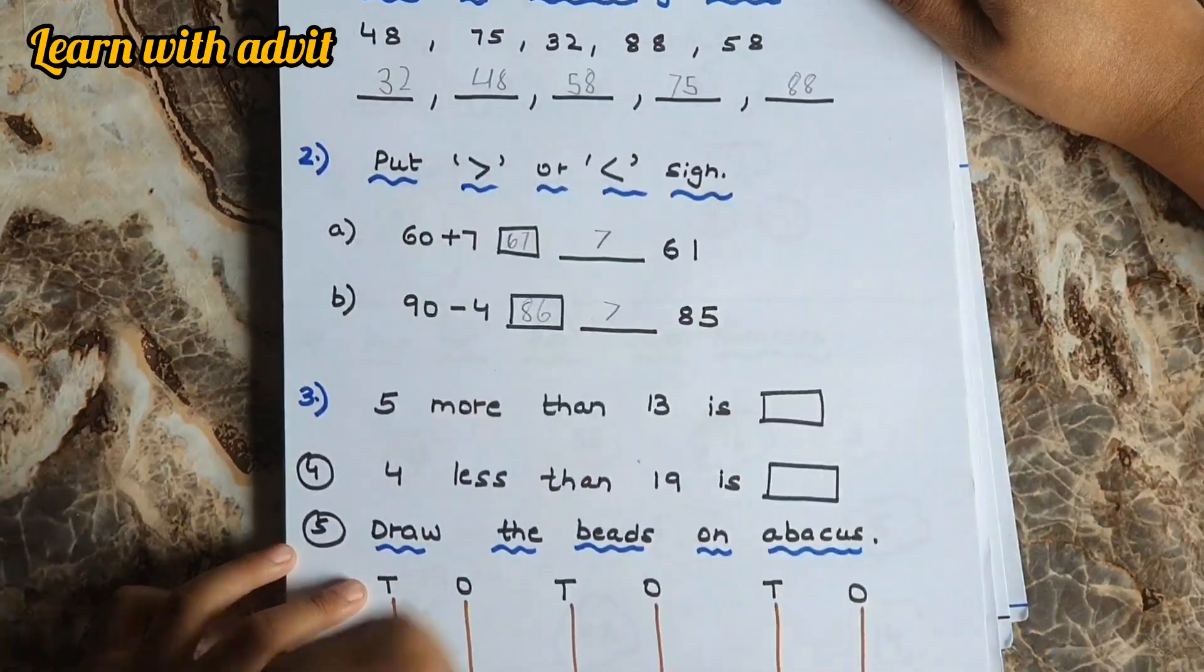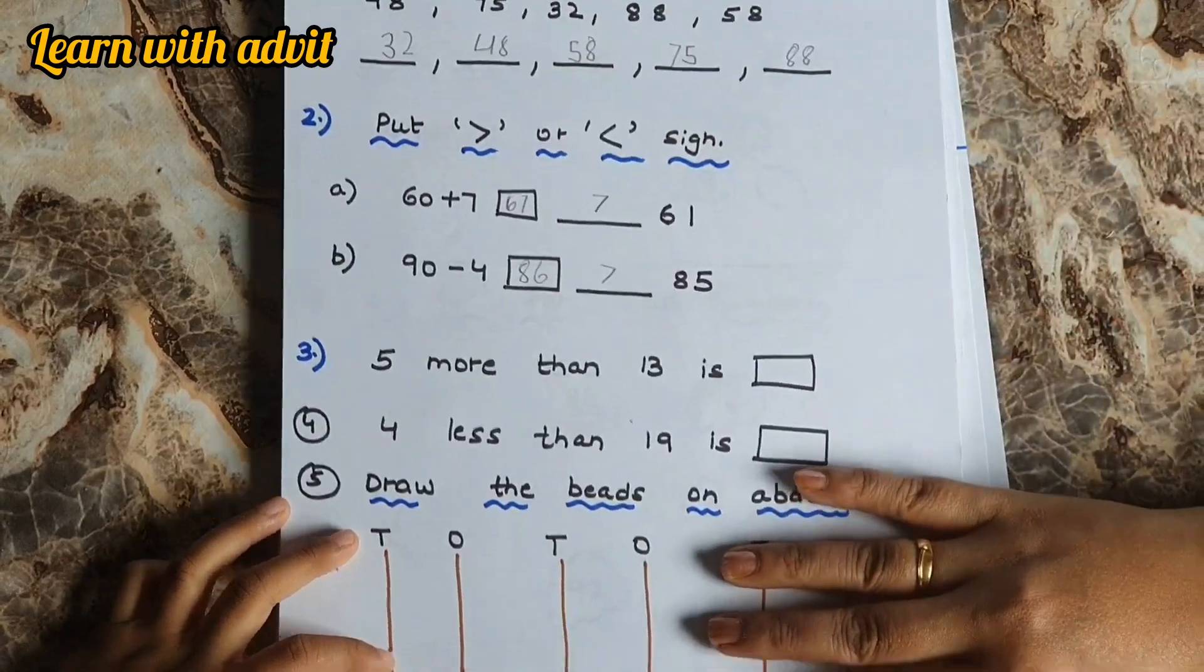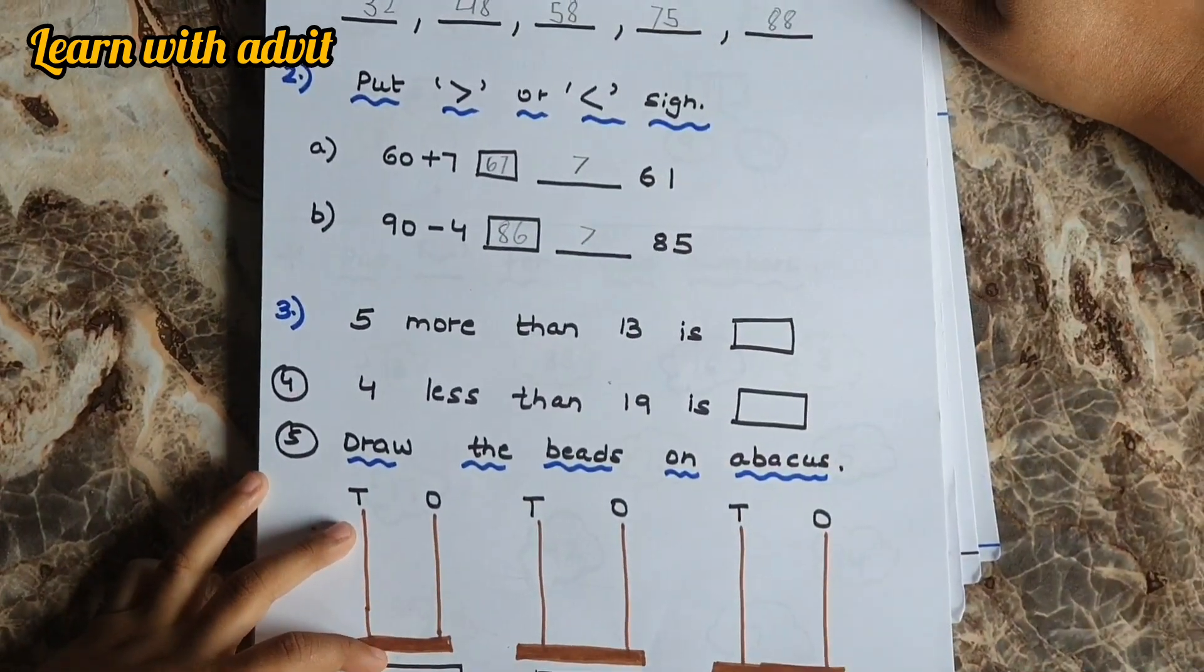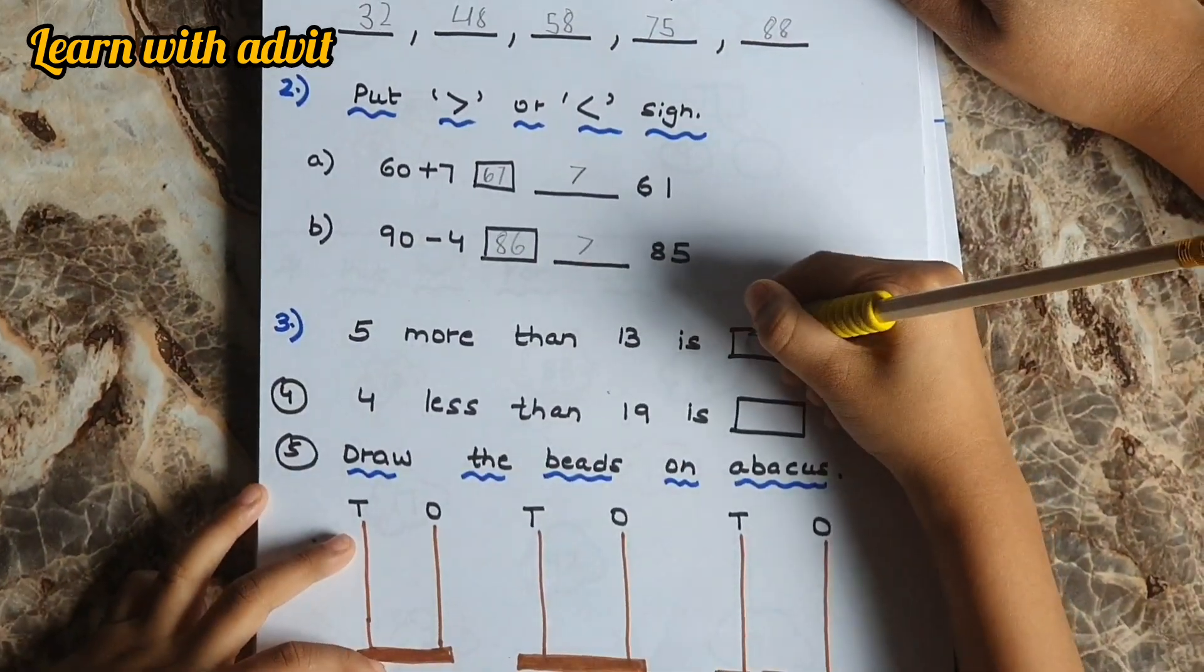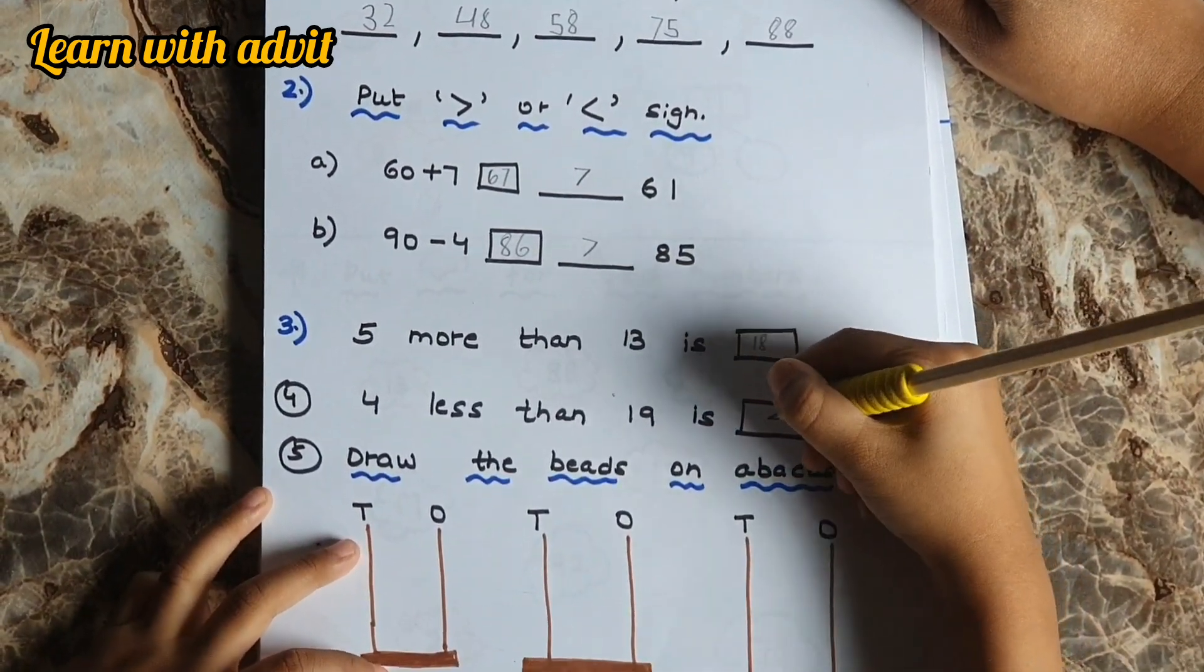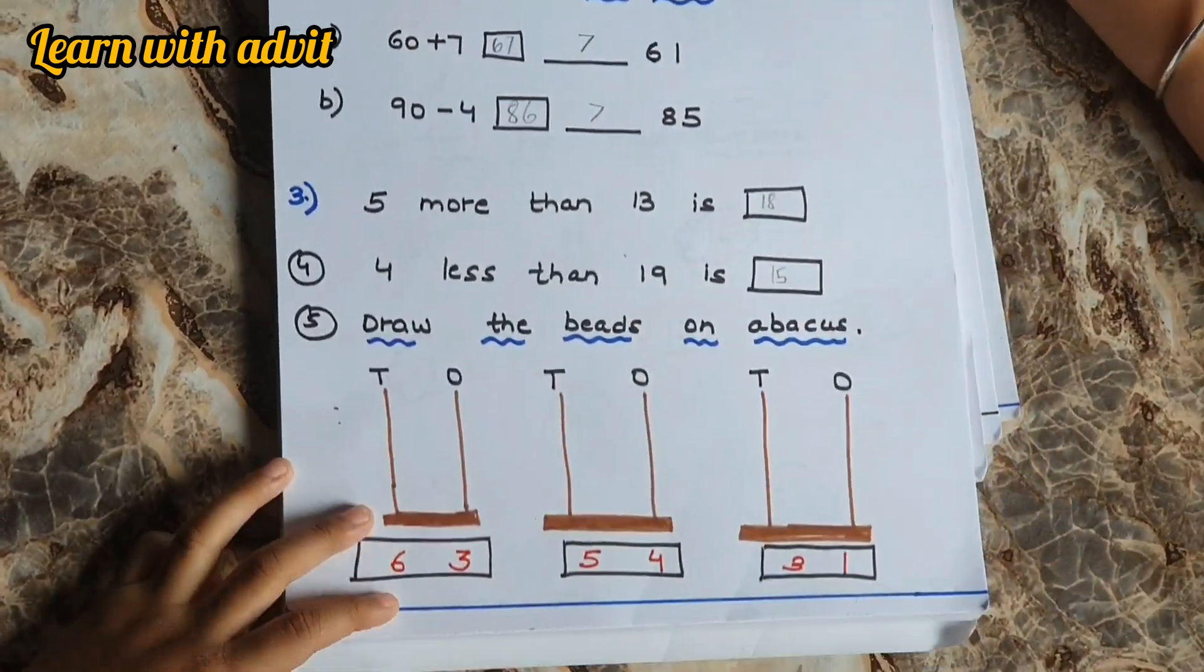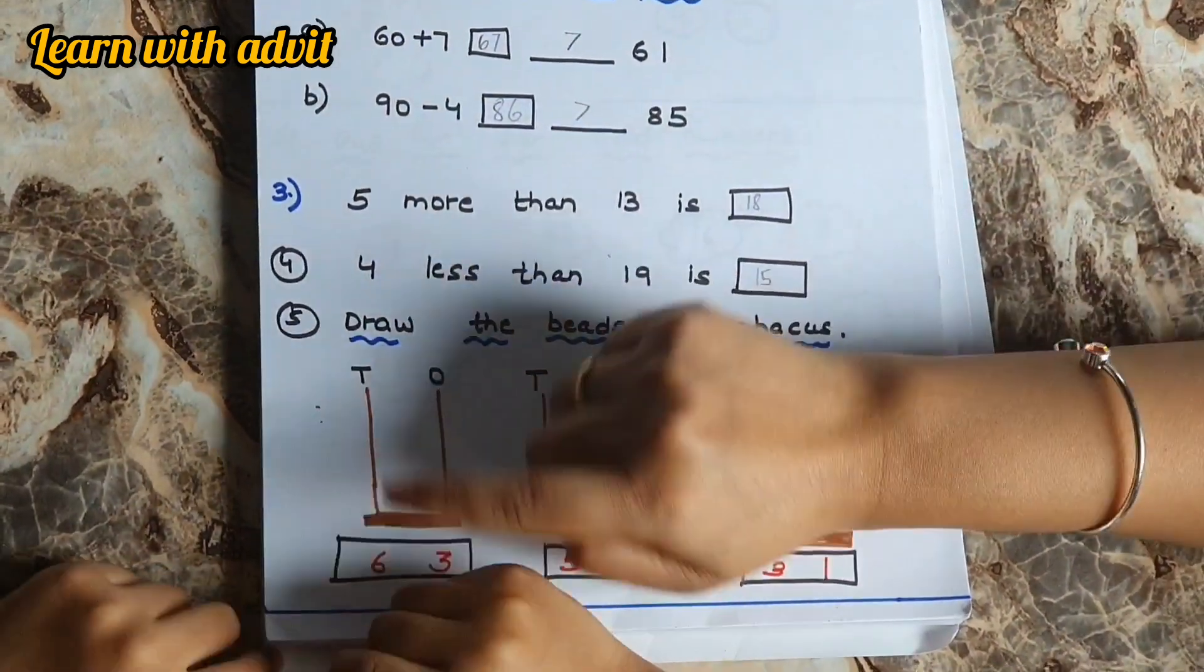5 more than 13 is 18. Very good. 4 less than 19 is 15. Very good. Draw the beads on an abacus. So here the tens place number is 6 and 3. Draw.